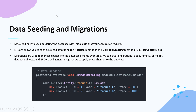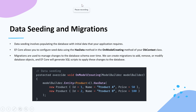Data seeding involves populating the database with initial data that your application requires. EF Core allows you to configure seed data using the HasData method in the OnModelCreating method of your DbContext class. Migrations are used to manage changes to the database schema over time — you can create migrations to add, remove, or modify database objects, and EF Core will generate SQL scripts to apply these changes. There are different approaches available for database migration.